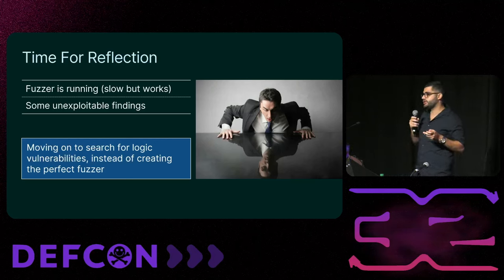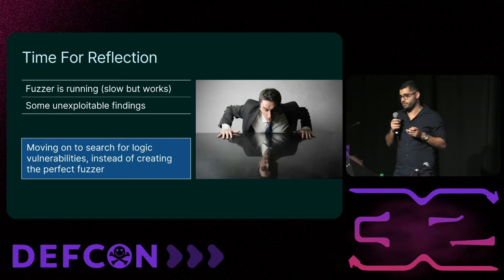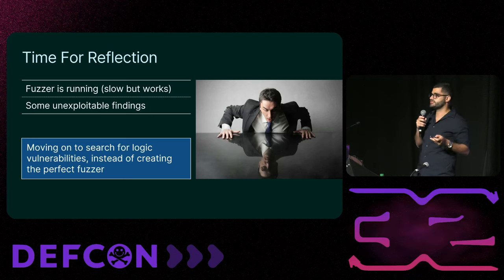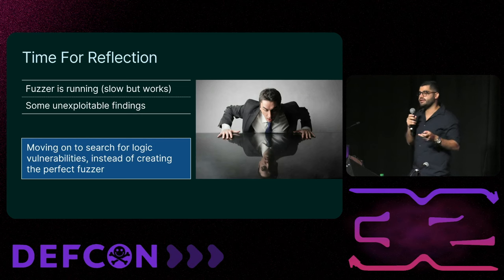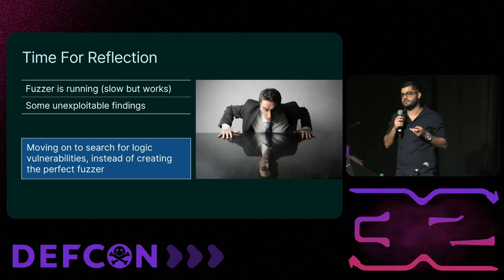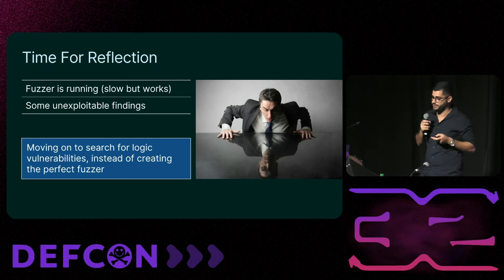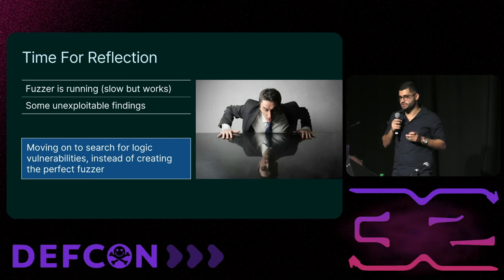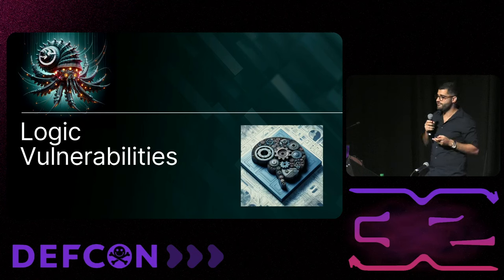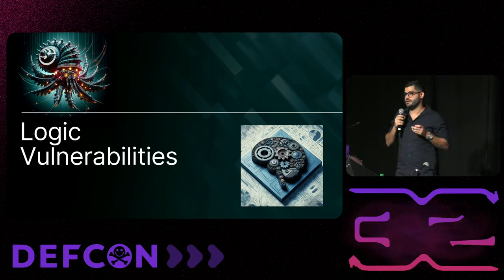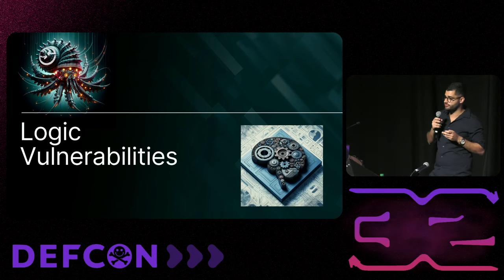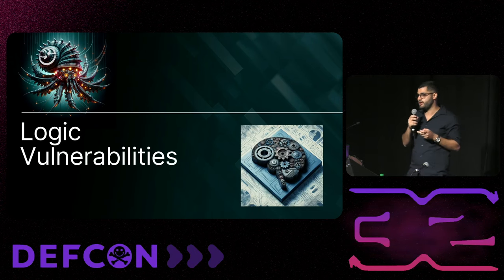To sum things up, we managed to get the fuzzer working consistently but each passing iteration took too much time, making the process quite slow. Even when we identified crashes they weren't always exploitable. We felt confident enough with QuickShare and the protocol to start searching for logical vulnerabilities — and we certainly found some gold there.